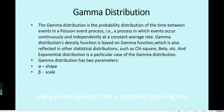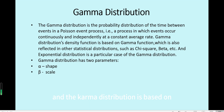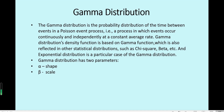A Poisson process has a constant occurring rate. For example, on average per hour there are 1.5 telephone calls coming in to the call center. This is called lambda — usually this parameter is called lambda. And the gamma distribution is based on what we want to know: the probability of the time until an event occurs.